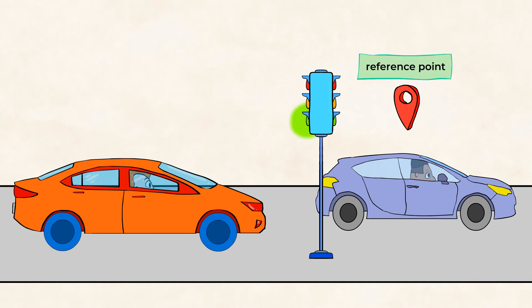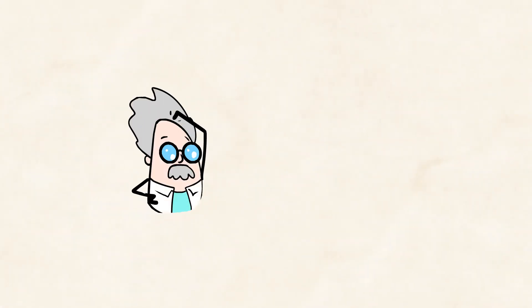Because your brain had used the other car as a reference point. In reality, you didn't move at all. Your car did change its position compared to the other car, though, which means there is motion happening. But it wasn't you. It was the other car that was in motion. This leads to our next point.